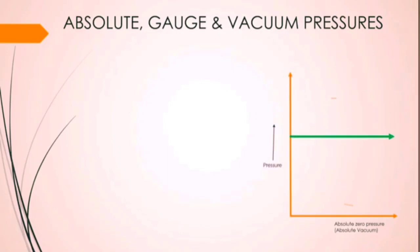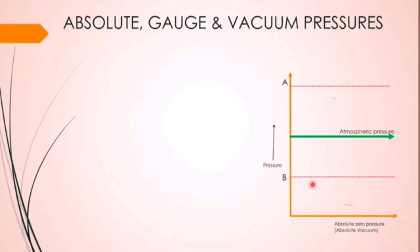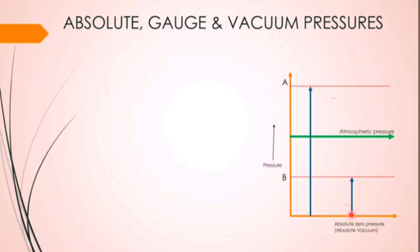With a green line I indicate atmospheric pressure. Atmospheric pressure is not zero — it has some value above absolute zero. I am now taking two points: point A above the atmospheric pressure and point B below the atmospheric pressure. If I calculate the pressure of point A from the absolute zero line, that is known as absolute pressure. Whether the pressure is greater or less than atmospheric pressure, if taken from absolute zero, it is called absolute pressure.